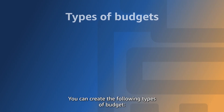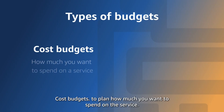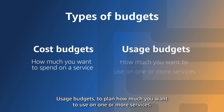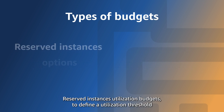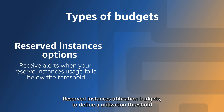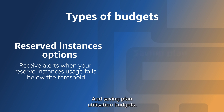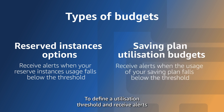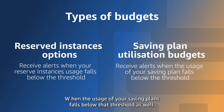You can create the following types of budget: Cost Budgets, to plan how much you want to spend on a service; Usage Budgets, to plan how much you want to use on one or more services; Reserved Instances Utilization Budgets, to define a utilization threshold and receive alerts when your reserved instances usage falls below that threshold; and Saving Plan Utilization Budgets, to define a utilization threshold and receive alerts when the usage of your saving plans falls below that threshold as well.